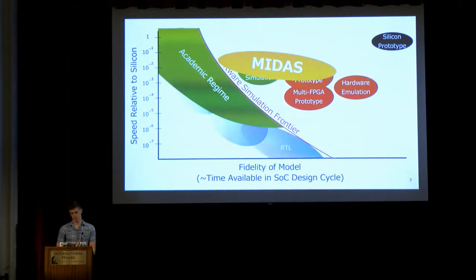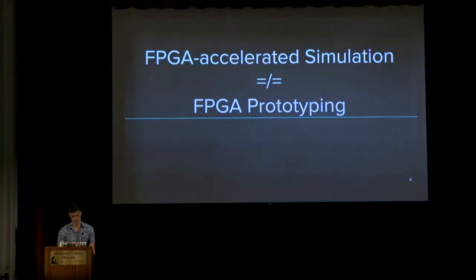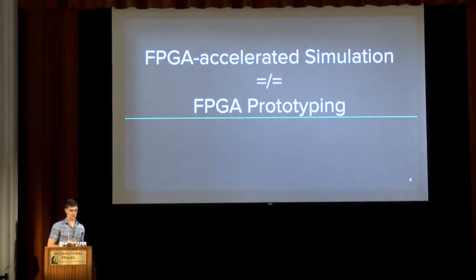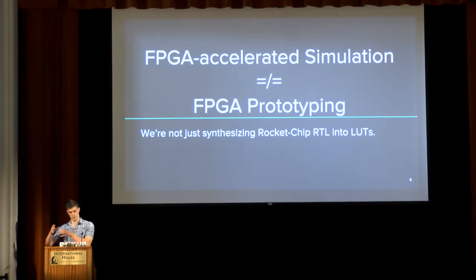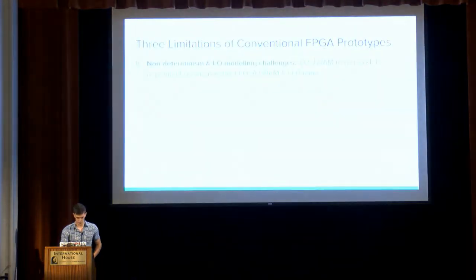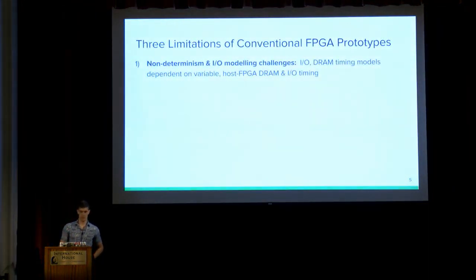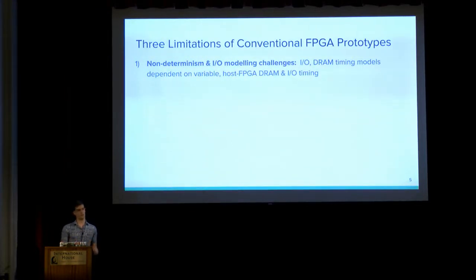MIDAS slots into this by building on the work of RAMP in a more programmatic and automated way. What makes a RAMP-style simulator different from an FPGA prototype is that it doesn't simply synthesize the ASIC RTL into LUTs, but rather decouples the execution of the simulator from that of the host FPGA. The first limitation of conventional FPGA prototypes RAMP tried to address: if you synthesize an ASIC design to an FPGA, it's not natively non-deterministic and you need tricks to model IO and DRAM properly.